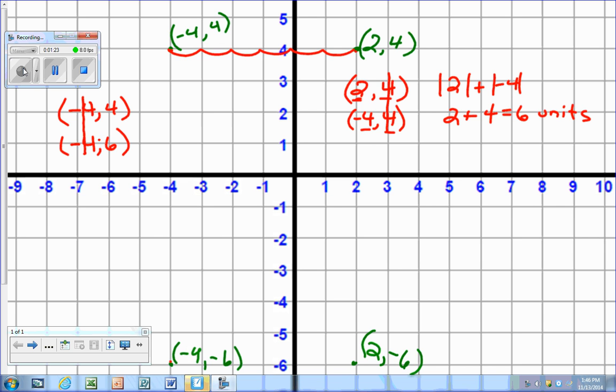(-4, -6). They are in different quadrants, negative positive and negative negative, so that means again I'm going to add the absolute values of the two y-coordinates. The absolute value of 4 plus the absolute value of negative 6 gives me 4 plus 6 equals 10 units,